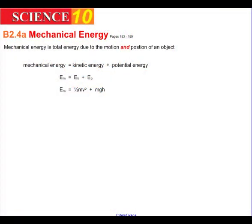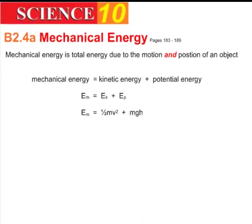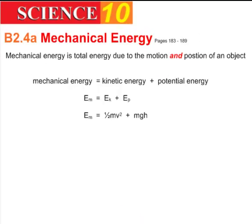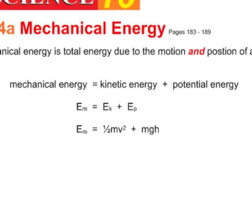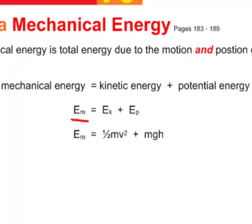And finally, B2.4 Mechanical Energy. When we say mechanical energy, we're talking about the total energy that an object has due to its motion and its position, both. So in other words, mechanical energy is equal to the kinetic energy of the object as well as its potential energy. You can symbolize that by saying EM, for mechanical energy, is equal to EK plus EP.